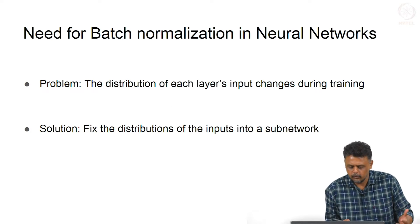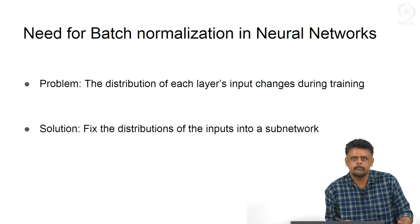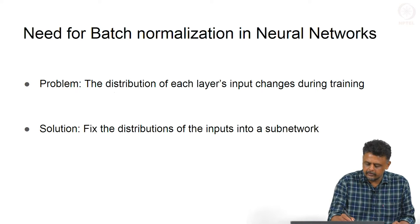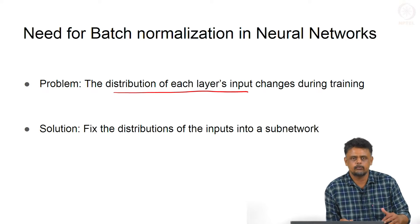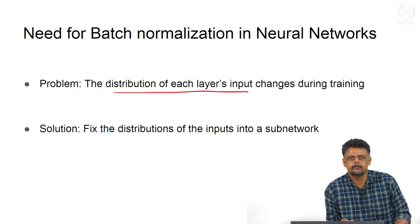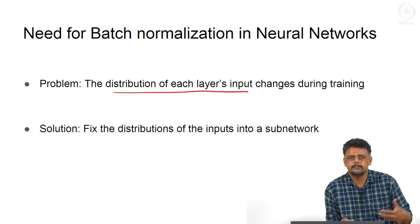We will look at what batch normalization is and then consider the problem when training a deep neural network. When we train a deep neural network, the distribution of each layer's input changes during training. As we train, because the weights keep changing, the input to a particular layer in the network changes dynamically.